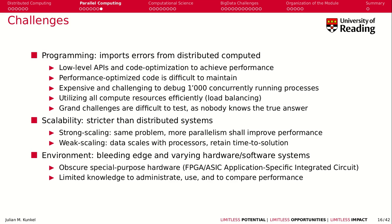Challenges in parallel computing are basically imported from distributed computing — the same problems — but there is also the critical issue of performance. It's really hard to get performant code, and by performance we also talk about efficiency: making the best use of available hardware resources. A lot of this means using low-level APIs and doing a lot of code optimization, which is hard even for experts. It's really expensive and challenging to debug thousands of concurrently running processes working together.